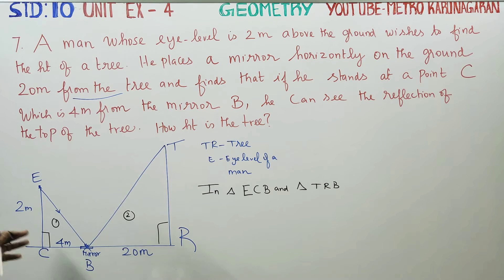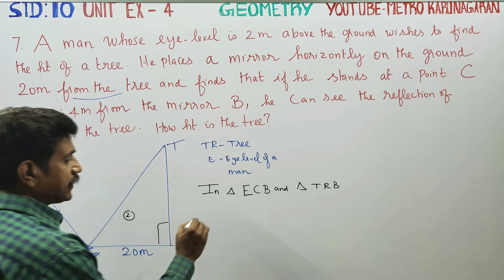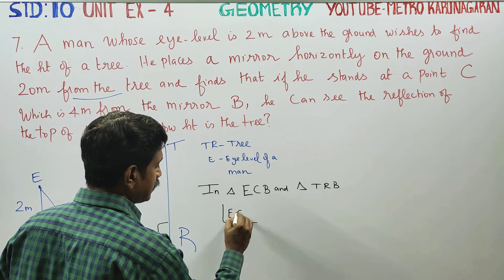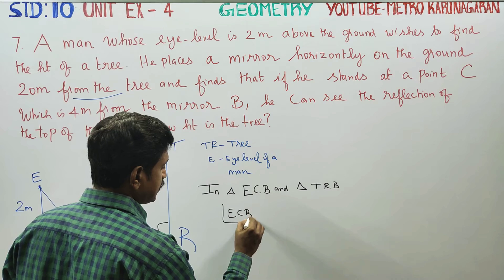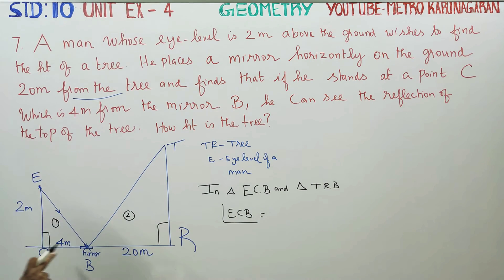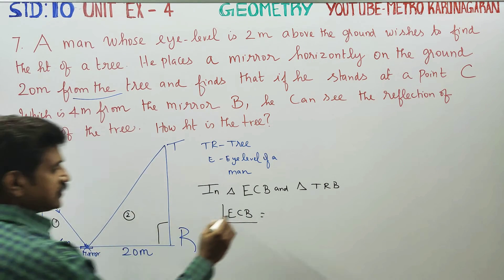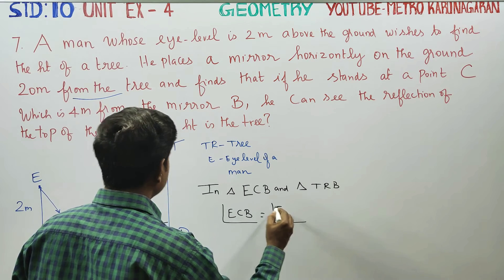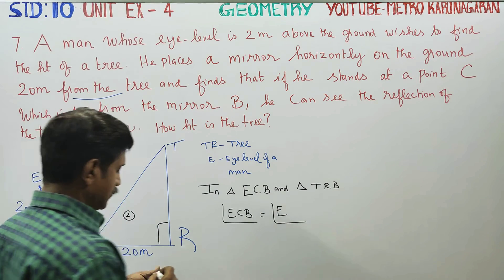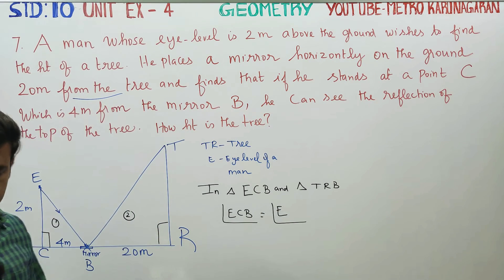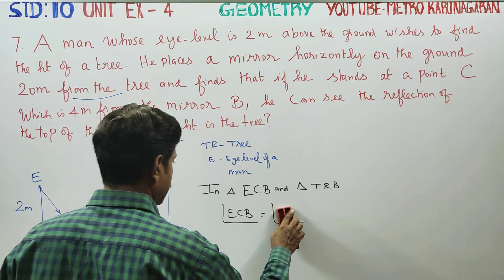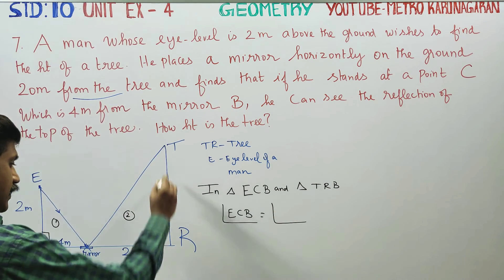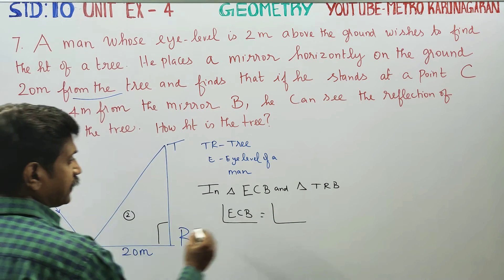Both triangles have 90-degree angles. Angle ECB is equal to angle TRB because they are both 90 degrees.